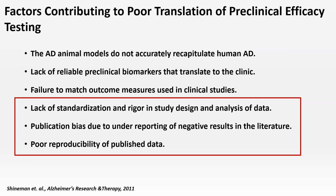Another review by Karen Ash reports that more than 300 therapeutic agents have been shown to ameliorate pathology and/or cognitive deficits in transgenic AD models, but none have been advanced to the FDA for approval as an effective disease-modifying therapy. This can be taken as evidence that there is poor translational validity of drug trials in AD animal models. The paradox is that while we have cured Alzheimer's in mice many times over, this success has simply not translated to the clinic. Key contributing factors include failure of animal models to fully recapitulate human Alzheimer's, lack of reliable preclinical biomarkers, lack of standardization and rigor in study design, poor reproducibility of published data, and publication bias favoring positive findings.